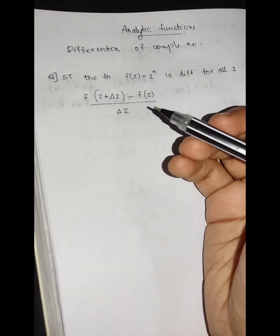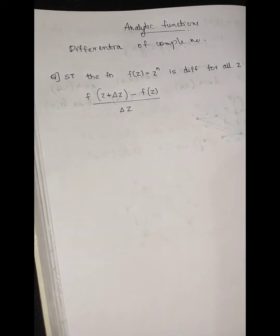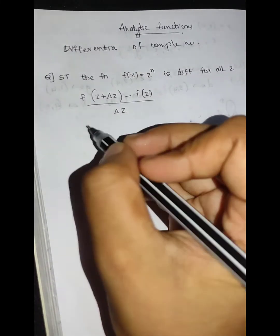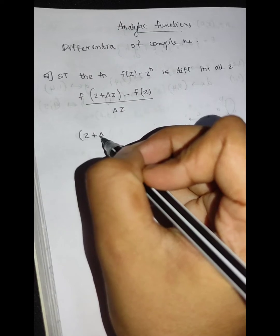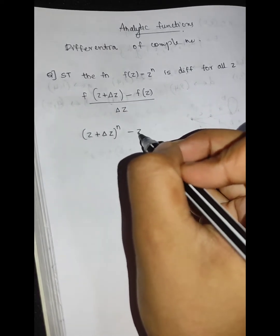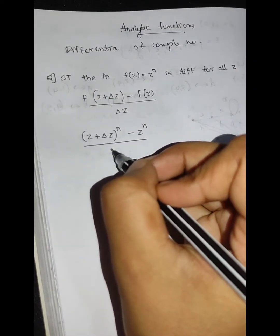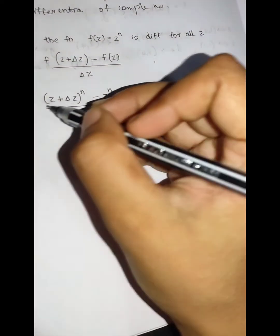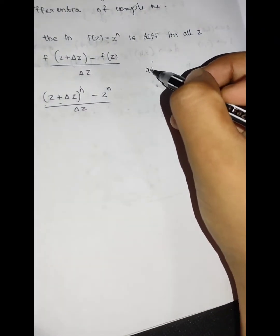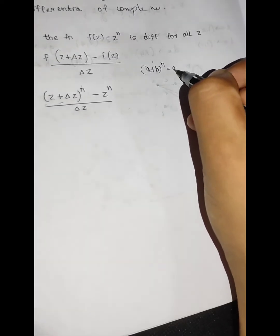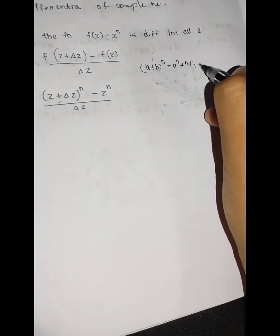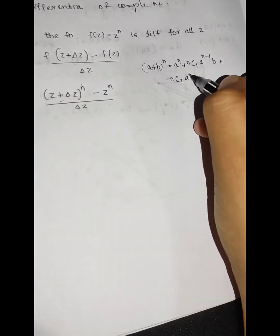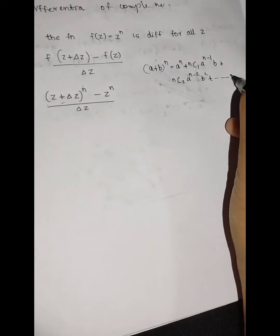Delta z raised to n minus z^n divided by delta z — this is f of z. We will show the limit. Then we will show the limit. f of z is equal to n.